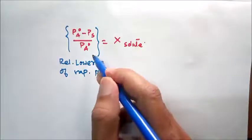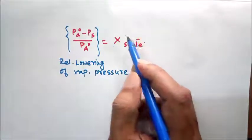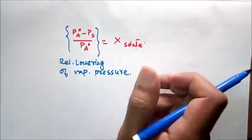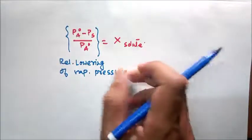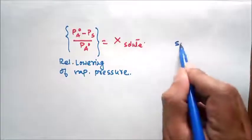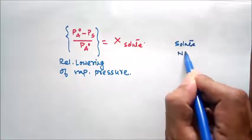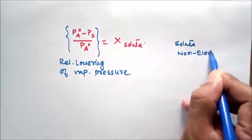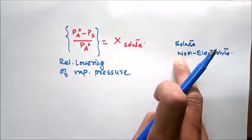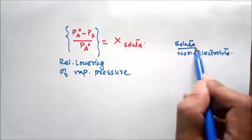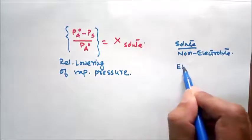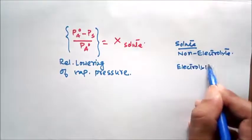Since this is a colligative property, the relative lowering of vapor pressure of a solution equals the mole fraction of the solute in the solution, which depends upon the number of particles of the solute. In this derivation, we have considered the solute as a non-electrolyte. However, the solute can also be an electrolyte, like sodium chloride.